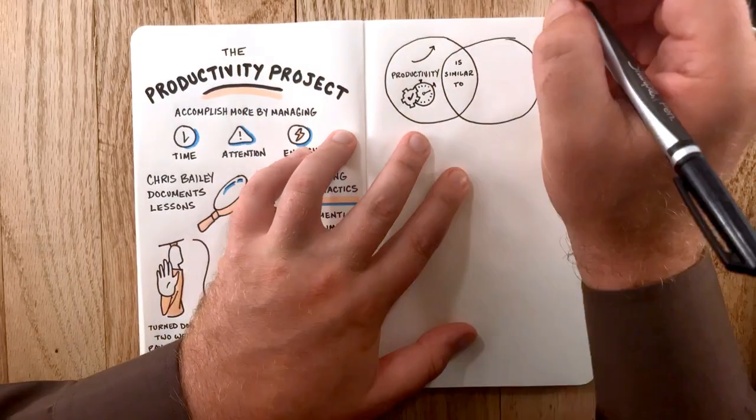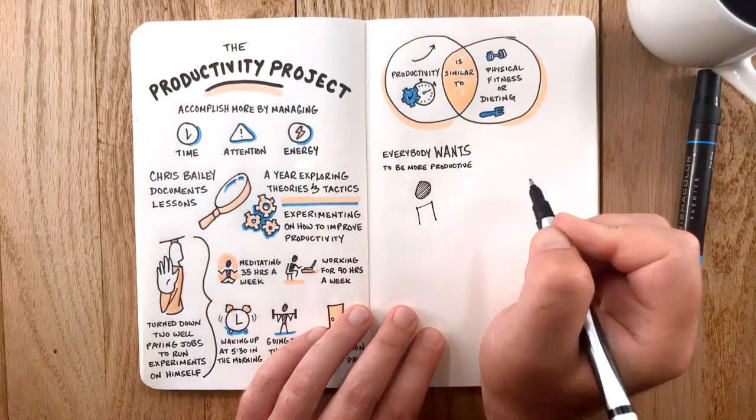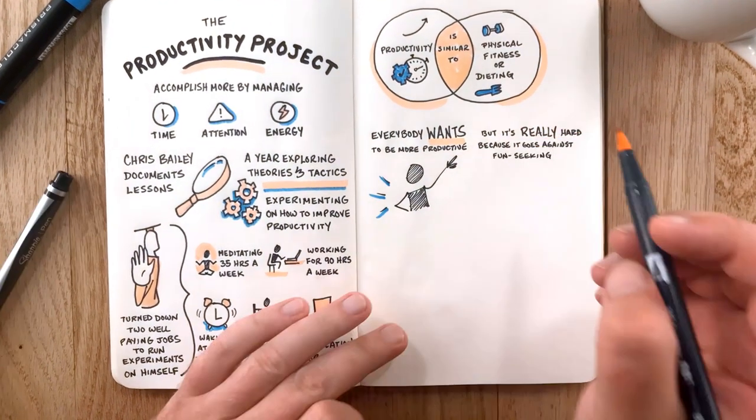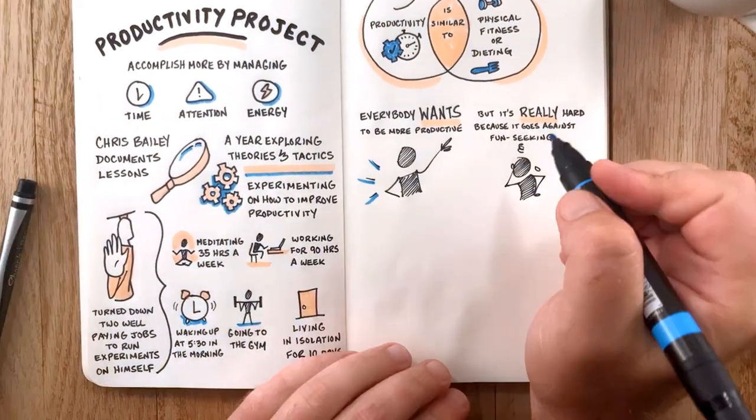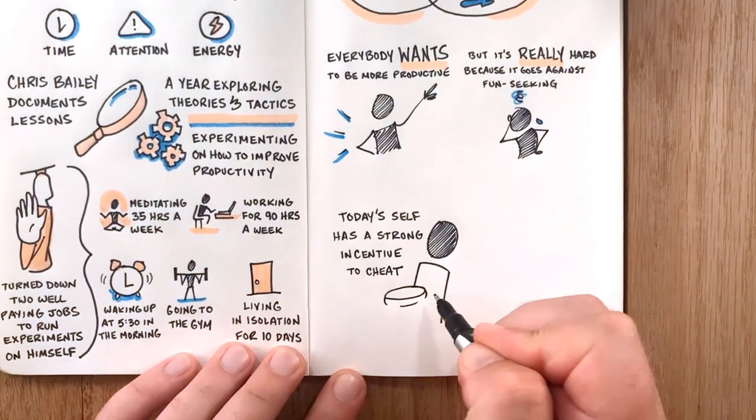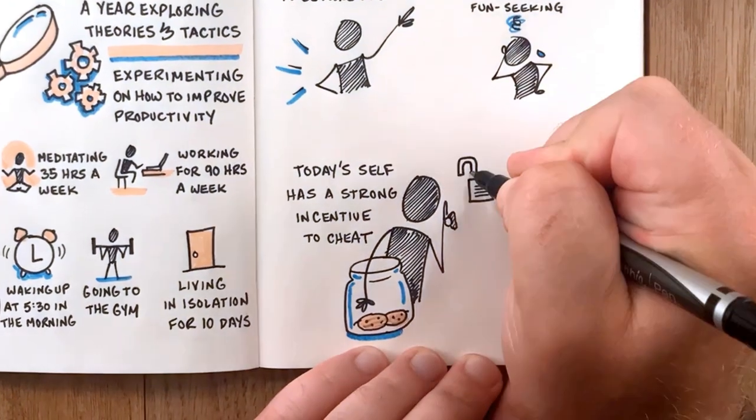Productivity is in many ways similar to physical fitness or dieting. Everybody wants to be more productive, but it's really hard because it involves habits that go against your fun and excitement-seeking parts of the brain. Similar to getting on a diet, today's self has a strong incentive to cheat. Sure, there are productivity hacks—these are equivalent to the latest diet fads. You'll get some quick results, but they're only temporary.